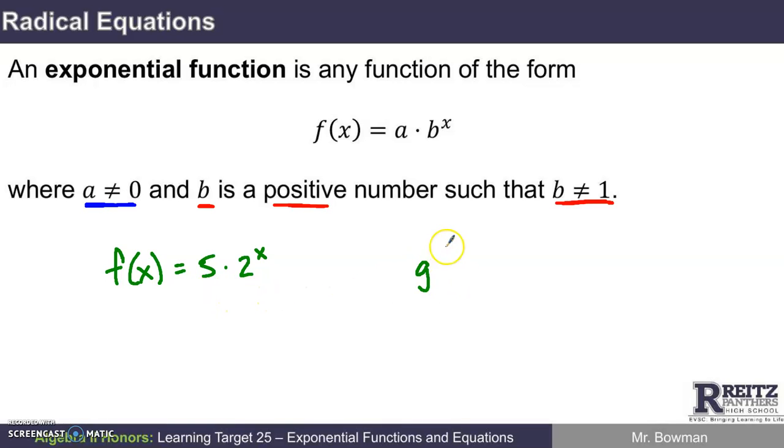Here's another one, g of x. There's nothing that says a can't be negative. You could have negative four times one sixth to the x power. There's nothing that says b has to be an integer. The reason we use b for that second number is that we tend to call that the base of the exponential function.